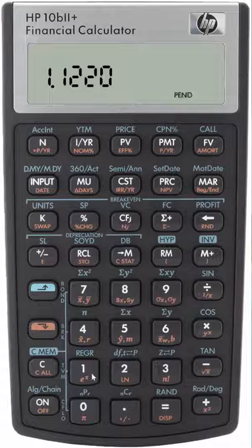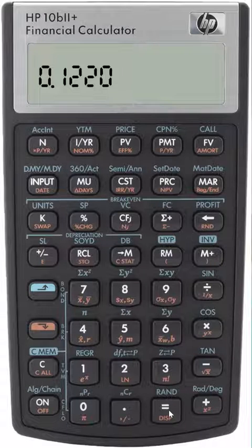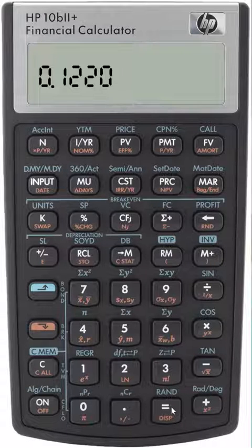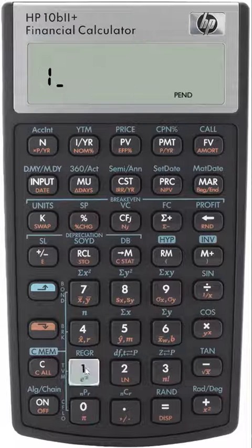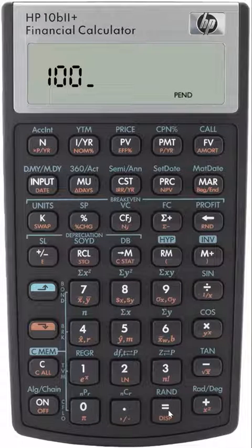And then finally, minus 1 equals, and if you are of the frame of mind where you can immediately interpret that as 12.2%, that's great. Otherwise, you can multiply it by 100 to see the final result. 12.202%.